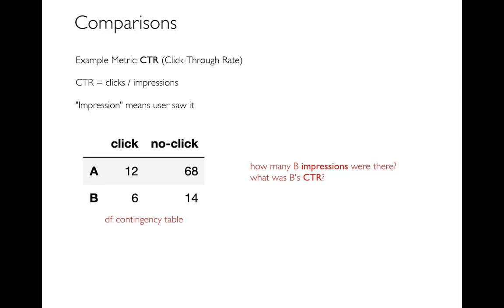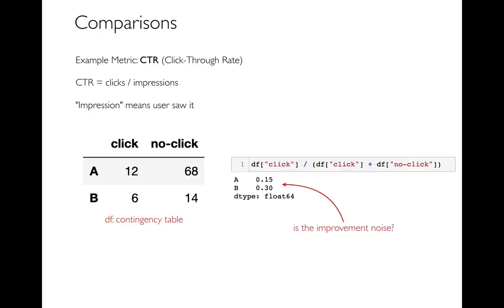When you did your A/B testing you kept it pretty even at 50-50, but it's common to have your original version A get most traffic while only a small percentage sees B. Here, 20% of total users saw version B. Looking at the table with 100 impressions total: there were 6 plus 14 = 20 B impressions, so B's click-through rate was 6 out of 20, which is 30%. Comparing that to version A's roughly 15% click-through rate, B is actually doing quite well.